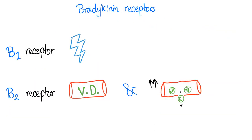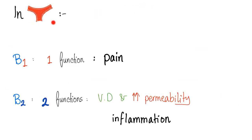Bradykinin has two receptors: B1 and B2. B1 receptor is responsible for pain — acute or chronic pain due to chronic inflammation. B2 receptor has two functions: vasodilation and increased vessel permeability, which lead to non-pitting edema as well as angioedema. In brief, B1 has one function — pain; B2 has two functions — vasodilation and increased permeability, both related to inflammation.